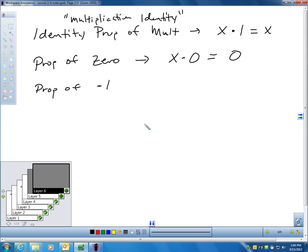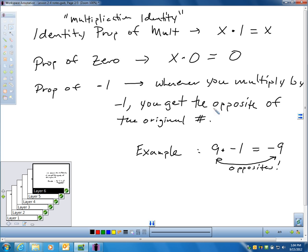And then there's also a property of negative, multiplication property of negative 1. And that property simply means whenever you take a number and you multiply by negative 1, you get the opposite of whatever number you started with. Okay. So, a good example of that might be like 9 times negative 1. If I take 9 times negative 1, I get negative 9. I get the opposite of what I started with. Those are 5 properties that we have to know in regards to multiplication. They make our work easier.